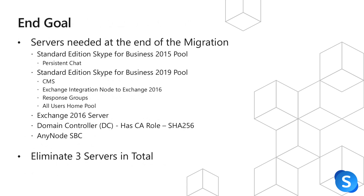When we look at the end goal of the migration, we need to know what we are trying to achieve. At the end of this migration, we're going to retain the Skype for Business Server 2015 pool, due to it having the persistent chat service. The persistent chat role has been removed from Skype for Business Server 2019. So if the organization wants to retain persistent chat, you will need to keep one of those 2015 pools around. If persistent chat is not required, you will no longer need that 2015 pool.